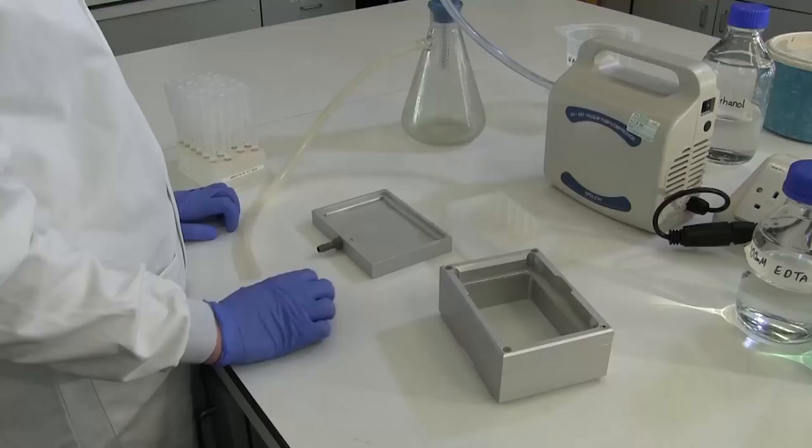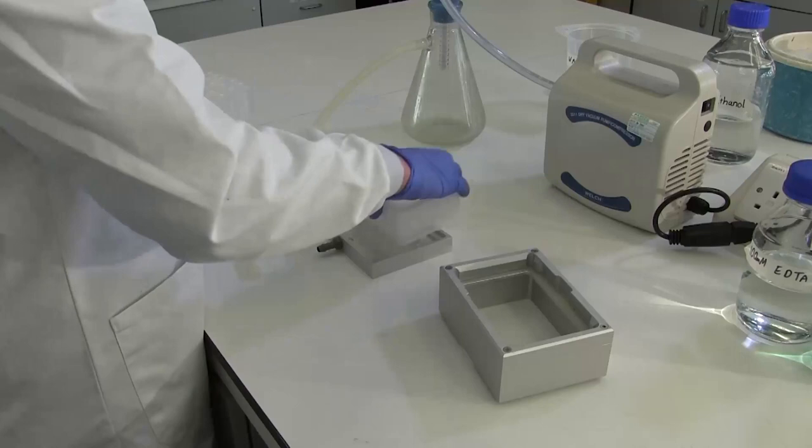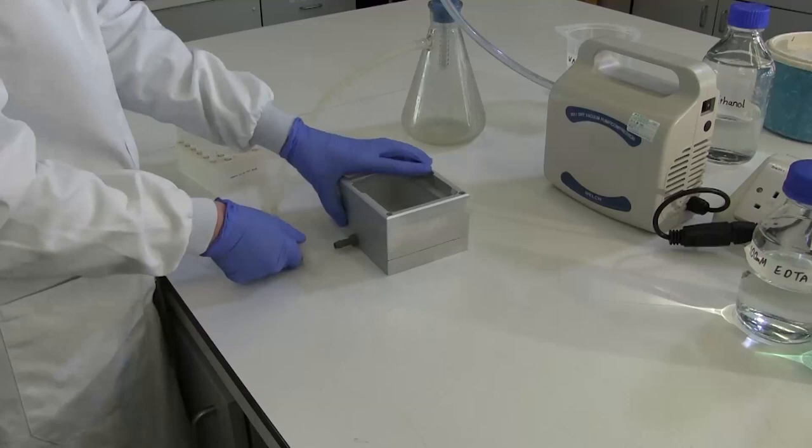Place an open collection plate in the base of the manifold and close with the top of the manifold. Attach tubing and place the assembled MCPA with columns on the top.